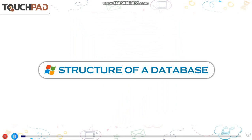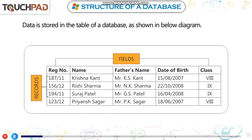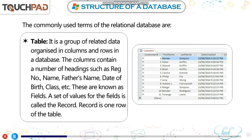Data is stored in the table of a database. The commonly used terms of the relational database are: Table — a group of related data organized in columns and rows. The columns contain headings such as registration number, name, father's name, date of birth, class, etc. These are known as fields. A set of values for the fields is called the record. A record is one row of the table.